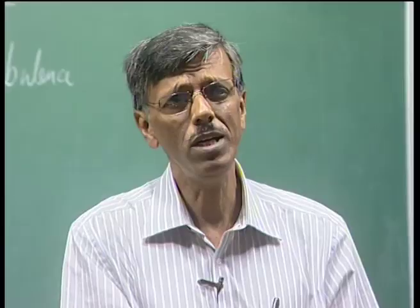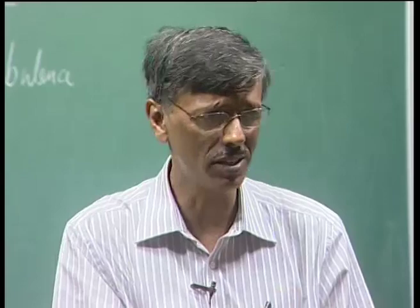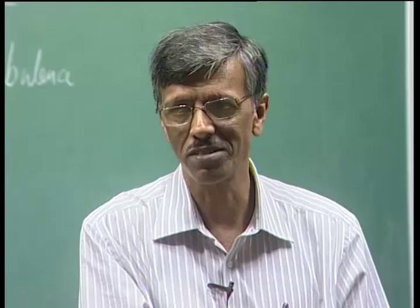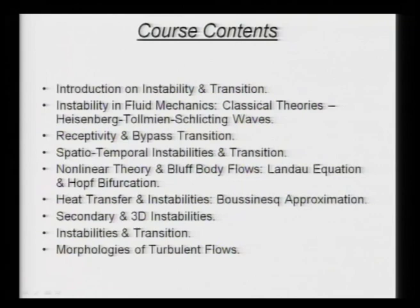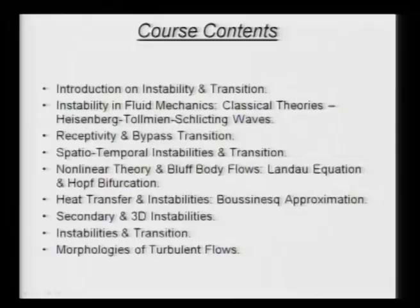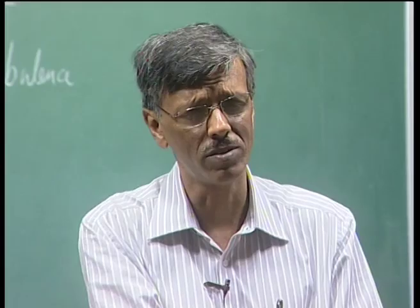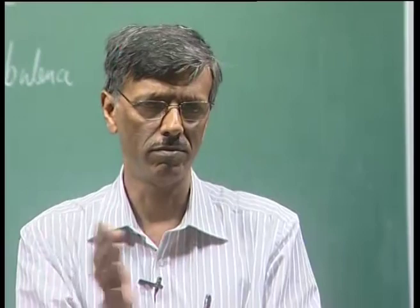Instability can occur in two different ways or a combination of both. Disturbances can grow in space, disturbances can grow in time, and disturbances can also grow in space and time simultaneously — that is what we call spatiotemporal instability. For external flows past streamlined bodies, one characteristic feature is that disturbances convect as they grow — that means it is a spatial growth, growth in space.